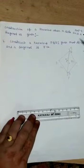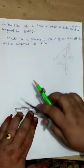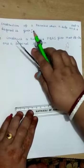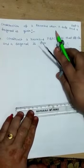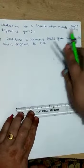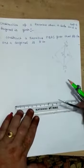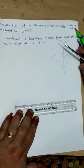Hello student. Now, this is construction of a rhombus when a side and a diagonal is given. This is video number 4.